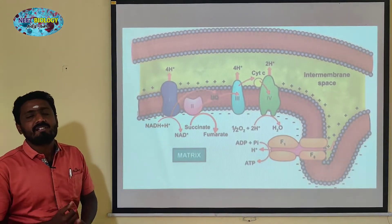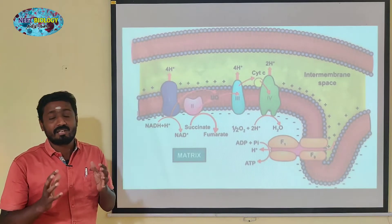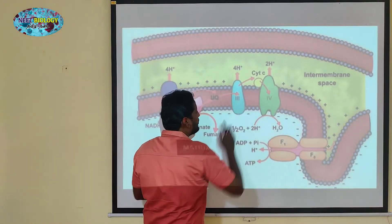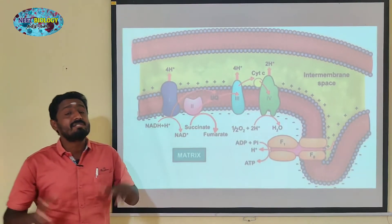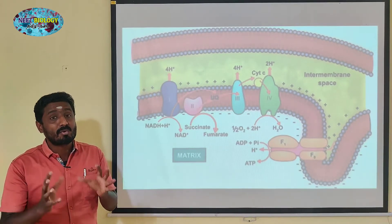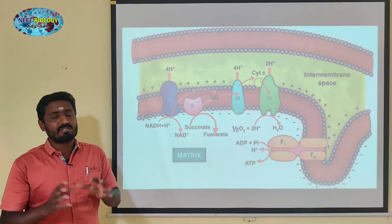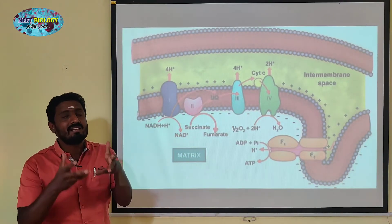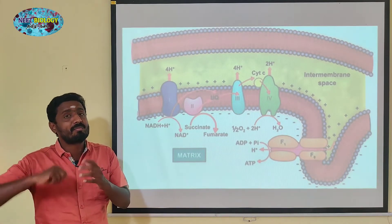Terminal Oxidation. Cytochrome C carries electrons — not hydrogen, but protons and electrons. You should say protons, not hydrogen. Protons and electrons are transferred through Cytochrome C, specifically through Cytochrome A and A3, and a maximum amount of protons is pumped.